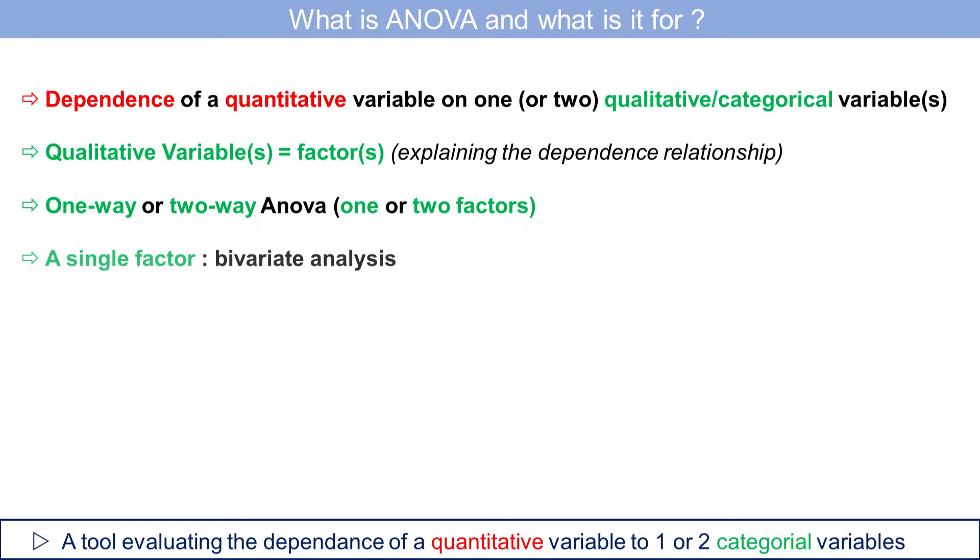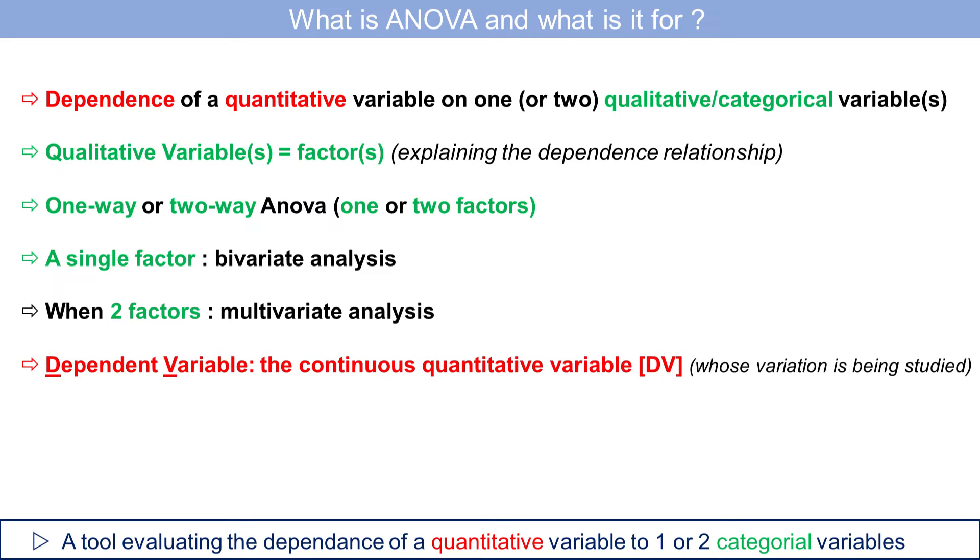The analysis is bivariate when only one factor is considered, while it is multivariate when two factors are considered. The quantitative variable is called the dependent variable and is denoted by dv. The factors are the independent variables, denoted by iv.